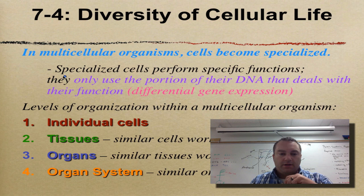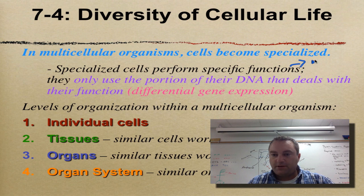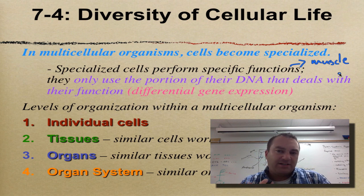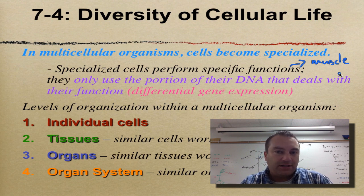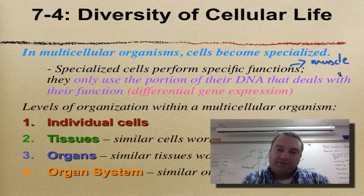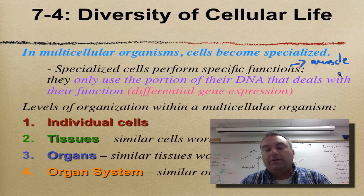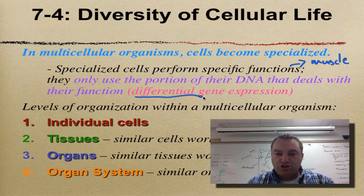Starting with differential gene expression — specialized cells perform special functions. For example, muscle cells are going to contract, nerve cells are going to send signals, and skin cells are going to be a covering to protect you from germs. Even though a skin cell, a muscle cell, and a nerve cell all have 46 chromosomes for humans — meaning they have every single gene you need to survive — a skin cell will only pay attention to the genes for skin, a muscle cell only to muscle genes, and a nerve cell only to nerve genes. That is called differential gene expression.